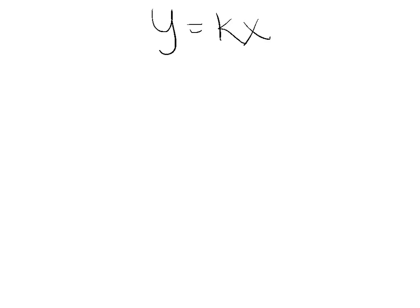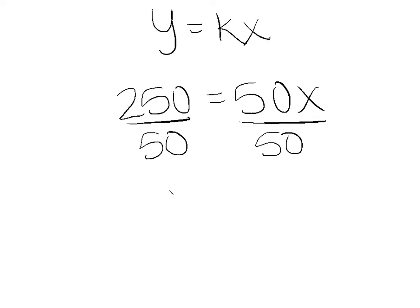Now, we'll substitute in for our variables. So we have 250 equals 50x. We are trying to find x, so we are going to divide by 50 on both sides. That will give us x equals 5 seconds.